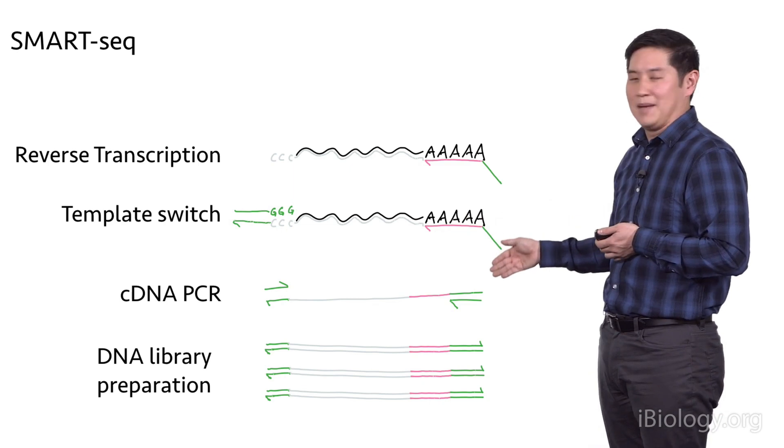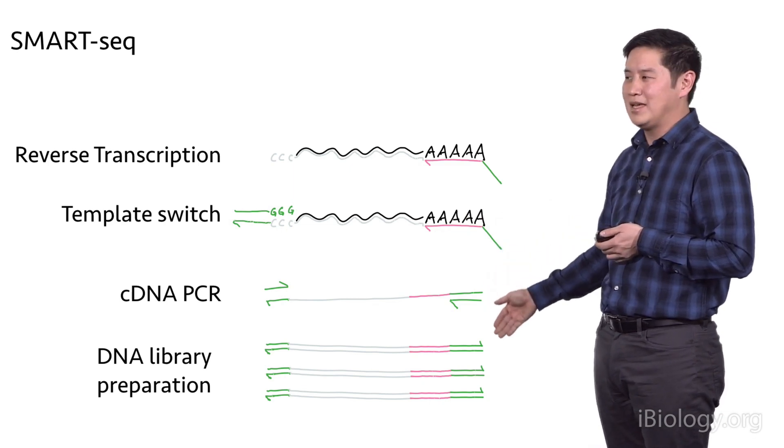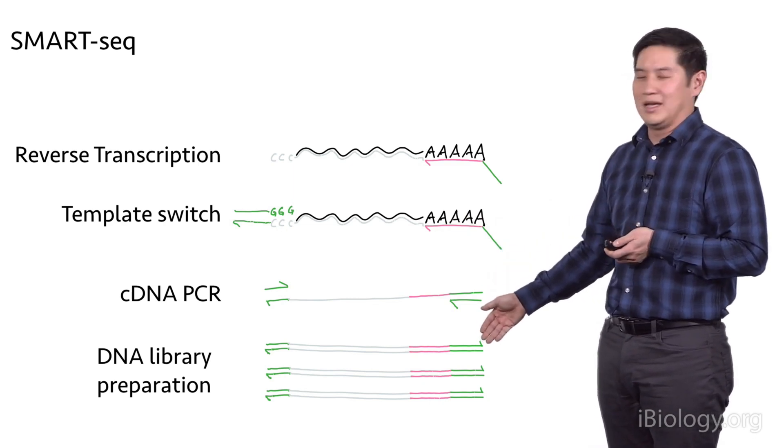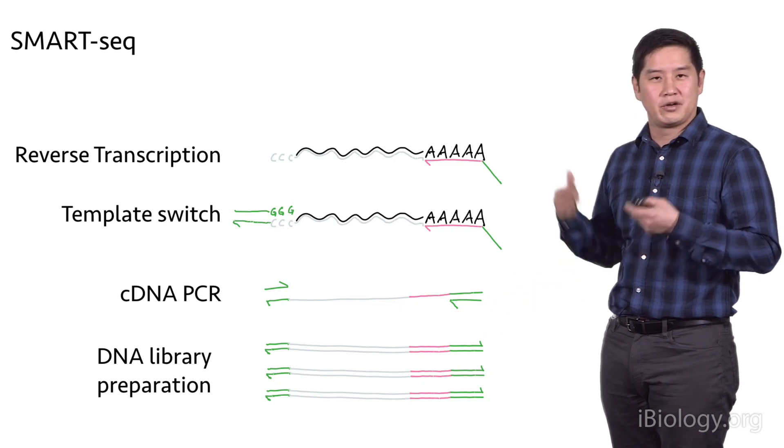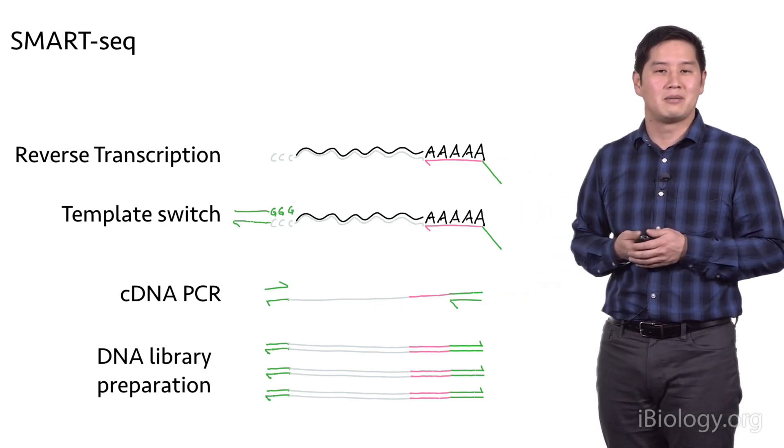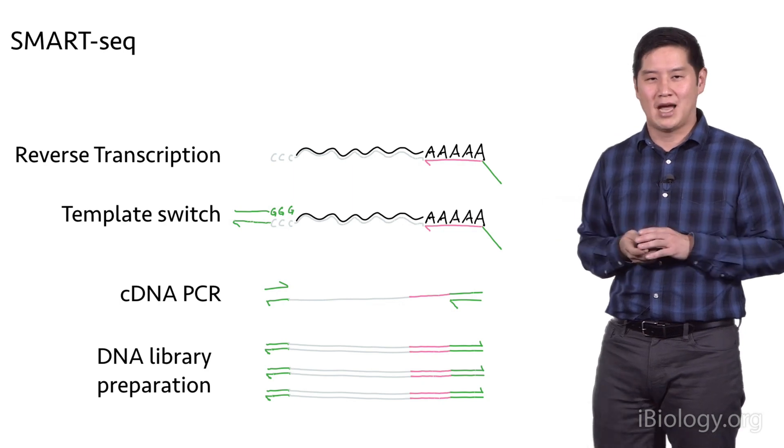This cDNA can now be amplified and many copies can be made, and then this can go into a library preparation using either your TruSeq style DNA library prep or your Nextera library preparation methods to generate a library.